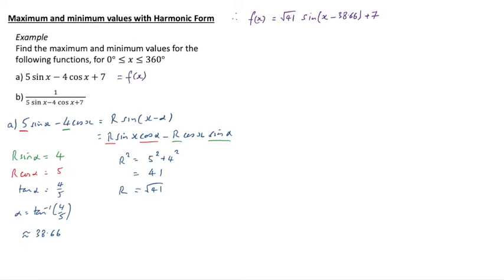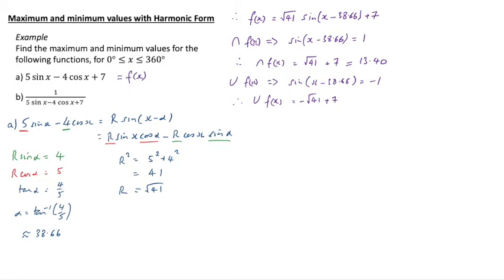Now, if we call that f of x to save writing, we've got f of x is root 41 sin x minus 38.66 plus 7. Now, being very lazy and using a maximum little scribble of a graph, the maximum value of f of x would be when sin of x minus 38.66 is equal to 1. That's going to maximise this, isn't it? The minimum value will come when the sign there is minus 1. So, that means the minimum value for f of x is going to be minus root 41 plus 7, which is 0.60.